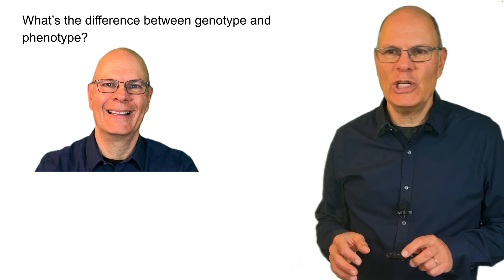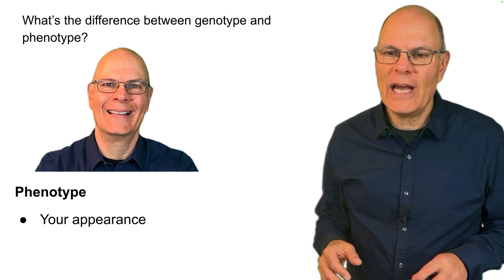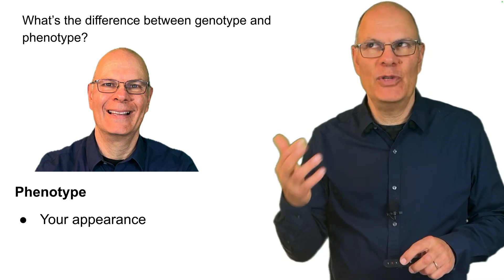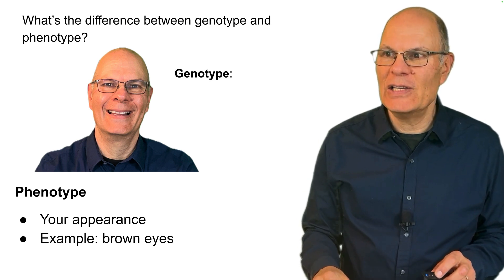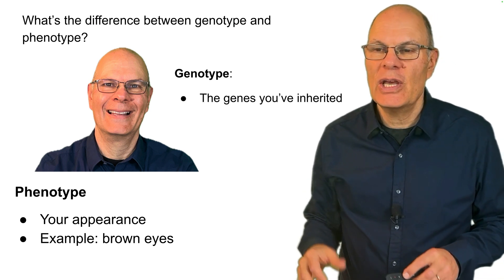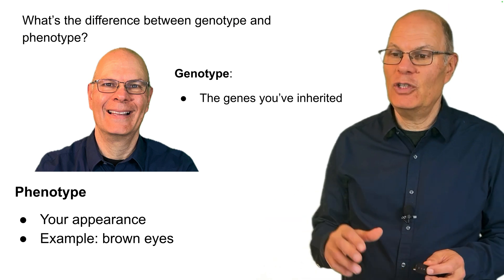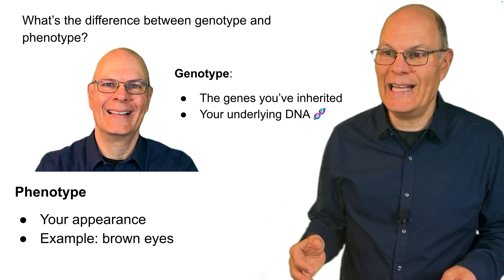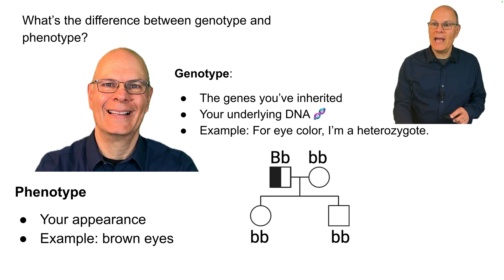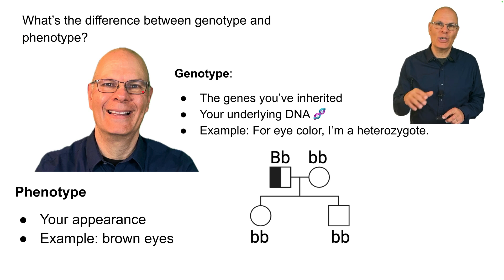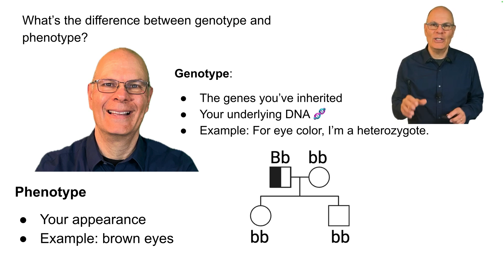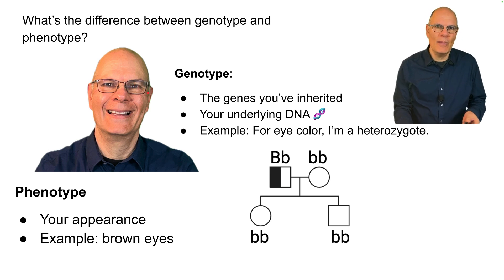Phenotype is your appearance — the observable characteristics in an organism. An example is brown eyes. Genotype is the genes that you've inherited, the type of genes that you have — it's your underlying DNA. My eye color is brown; that's a dominant phenotype, though eye color is actually complex and involves about three alleles. I'm a heterozygote, so my genotype would be capital B, lowercase b.